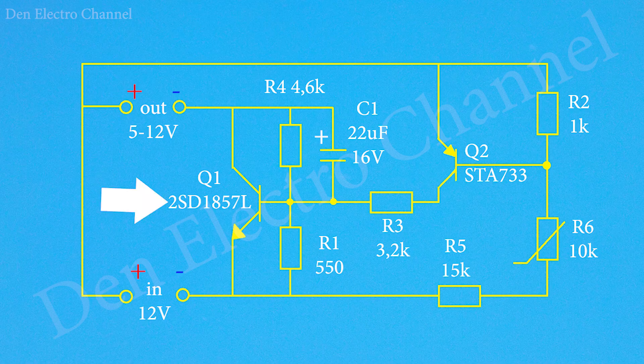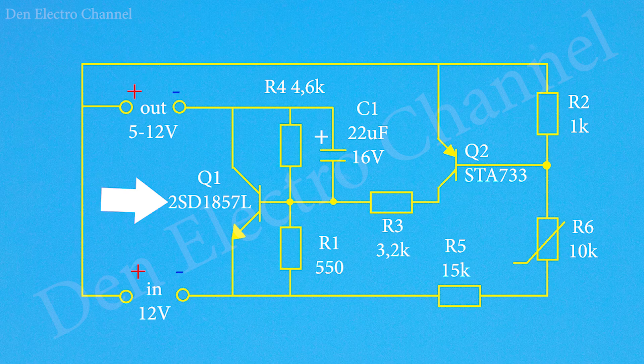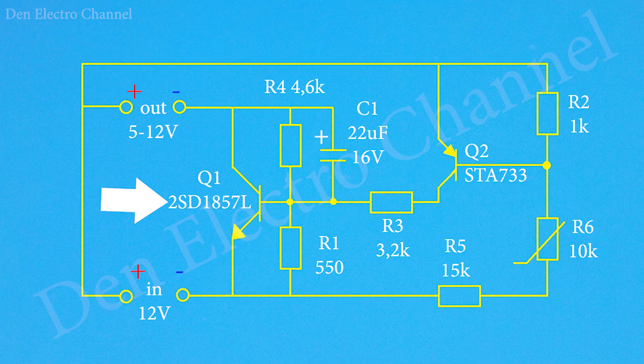The current goes to the fan through transistor Q1. We can say that this is the power part of the circuit. When the ambient temperature is low, the transistor is half closed and only 5 volts are supplied to the fan. The fan rotates at low speed. As the temperature rises, the voltage on the fan increases and the fan speeds up.